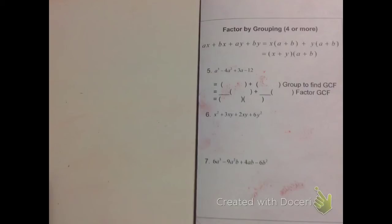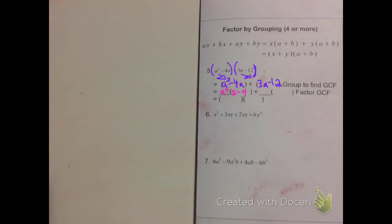Now we're going to do factor by grouping. We have the equation a cubed minus 4a squared plus 3a minus 12. Group them into two: a cubed minus 4a squared, and 3a minus 12. Factor out what each group has in common. The first group has a squared in common, giving a squared times a minus 4. The second group has 3 in common, giving 3 times a minus 4. The expressions inside the parentheses match, so take the outside variables a squared and 3 and place them in one set of parentheses, and a minus 4 in the other. That's how you factor by grouping.